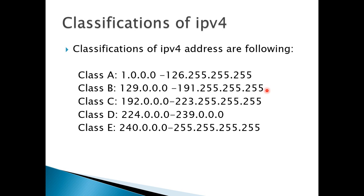Moving to class C IP address, its range is 192.0.0.0 to 223.255.255.255. Each network consists of only 254 hosts. Class C network is mostly used in small systems where only a minimum range of systems is required.